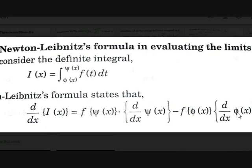Let's break it down. d/dx of i(x) is the change in i(x) with respect to x. f(ψ(x)) means you substitute the value ψ(x) in place of t, multiplied by d/dx[ψ(x)], which denotes the change in ψ(x) with respect to x. Minus f(φ(x)) · d/dx[φ(x)] follows the same logic.